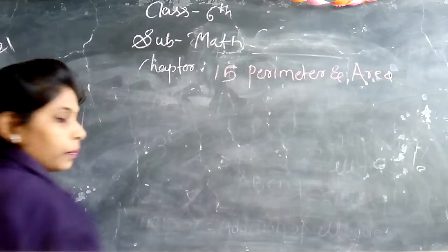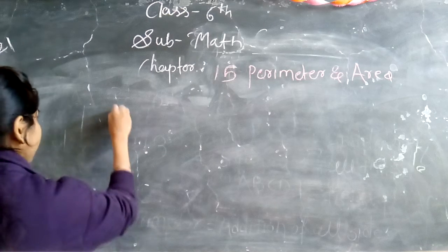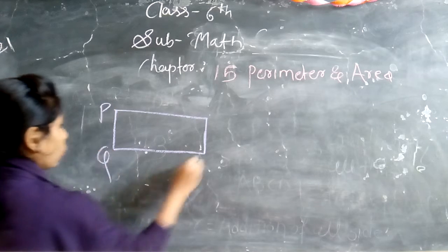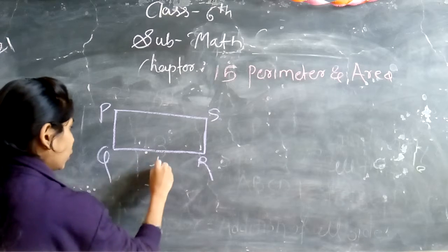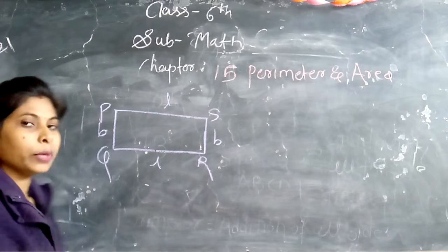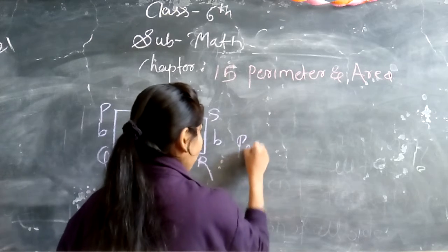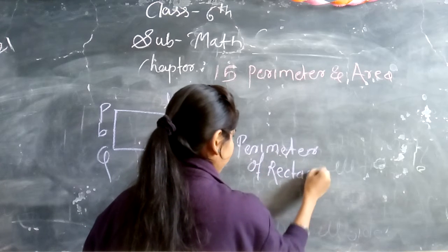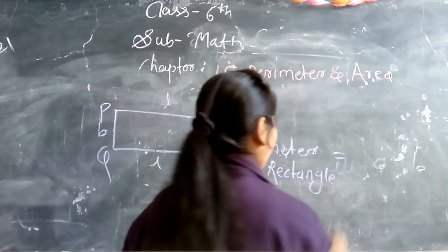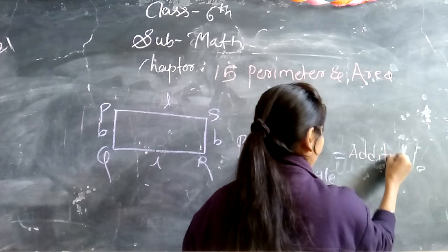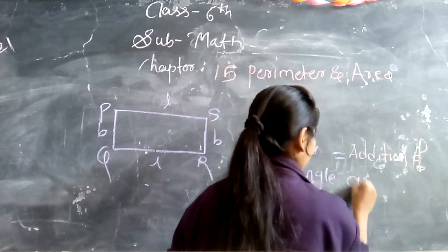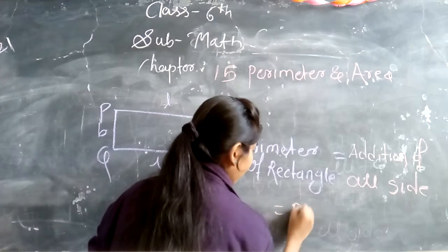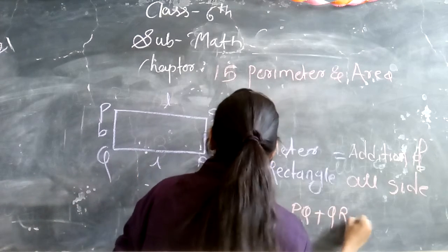Next, rectangle. So we will calculate the addition of all the sides. Addition of all sides means PQ plus QR plus RS plus SP.